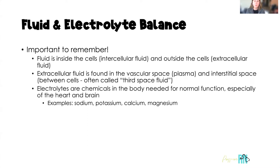We have fluid in all kinds of compartments inside the body. The first is fluid inside the cells, called intracellular fluid. We also have fluid outside the cells, called extracellular fluid. Breaking down extracellular fluid further: the first compartment is the intravascular space, and the water in this space is called plasma. Then we have the interstitial space, which is the space in between our cells, often called third space fluid.